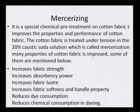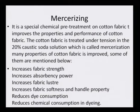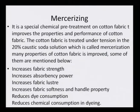Finally, we come to mercerizing. This is a chemical pretreatment of cotton that improves the property and performance of the cotton fabric. The fabric is treated under tension with 20 percent caustic soda solution, and this process is called mercerizing. Mercerization increases the fabric strength, absorbency power, fabric lustre, fabric softness, and handling property. Dye consumption is also improved when cotton is mercerized, and chemical consumption in dyeing is also reduced. With this, we have come to an end of the chapter called pretreatment.